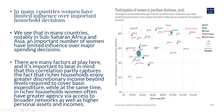In this last slide, we see participation of women in purchase decisions — specifically, the percentage of currently married women age 15 to 49 who say that they alone or jointly have a say in major household purchase decisions. There appears to be a positive association with GDP per capita and women participating in these household purchase decisions.